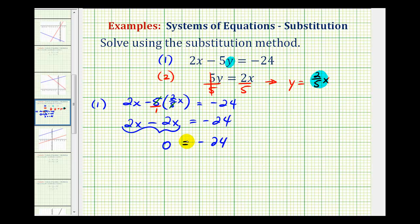Well this statement is false. Zero does not equal negative twenty-four. And this is what happens when there's no solution to the system of equations. So when using an algebraic method, or in this case the substitution method, if the variables cancel, here we have zero equals negative twenty-four, this indicates there is no solution.